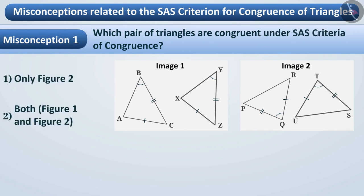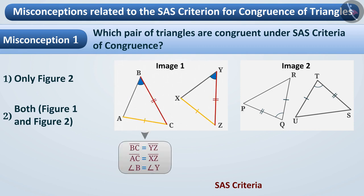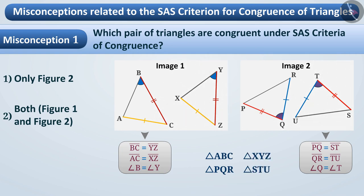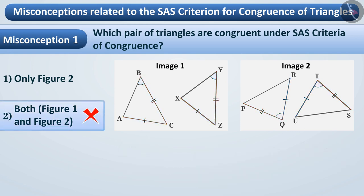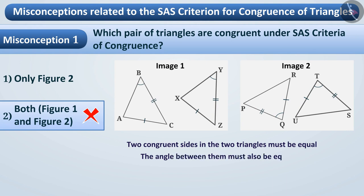Some children may not get the right understanding of SAS criteria. Children see that both triangles in the first figure have two sides equal and one angle equal. Similarly, the second figure also has two sides and one angle equal. Therefore, they think that the triangles shown in both figures are congruent under the SAS criteria, so they select option 2 — but this is an incorrect answer. Keep in mind that the two sides in the two triangles must be equal and the angle between them must also be equal.